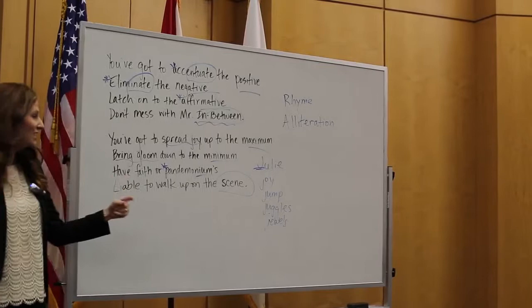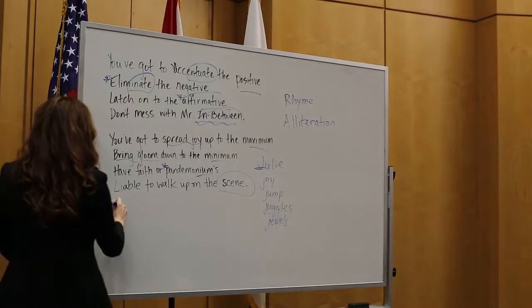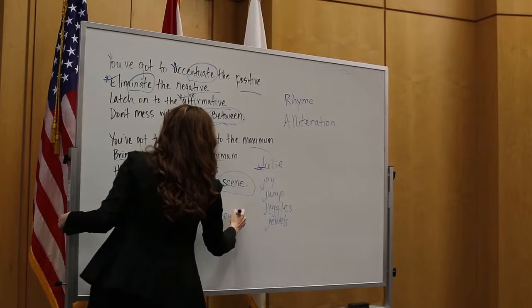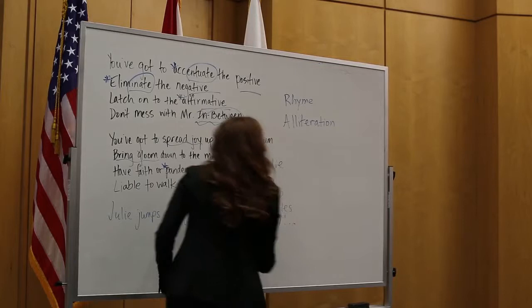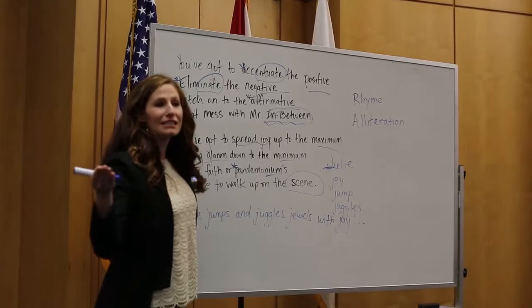Now how do we create a sentence using those words? We can add little connector words in there. Can someone come up with a sentence? It doesn't have to be in the same order. We have Julie — juggles, jumps, jewels with joy, in the jungle. Everyone can reread this sentence together: Julie jumps and juggles jewels with joy.